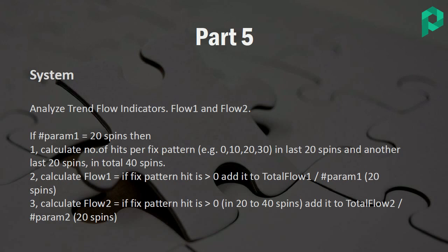Continuing from the previous part, we analyze a number of spins and calculate successful non-hit appearances. For parameter one, my best results come using 20 spins. I calculate the number of hits per fixed pattern across the last 20 spins, going back through all ten fixed patterns and incrementing a counter for each hit.